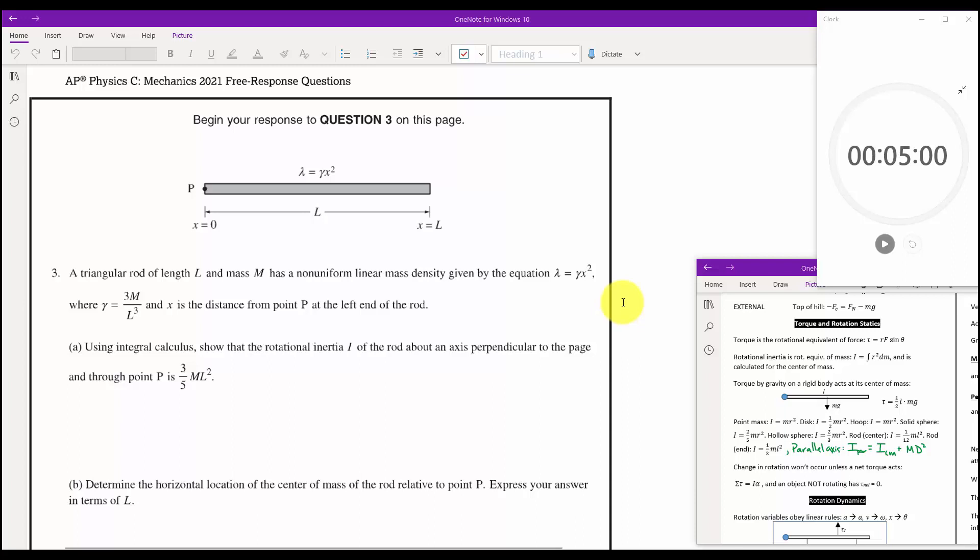Okay, problem number three. I'm going to dub this one the FRQ of death. There was one, 2006, some old FRQ that had that name. It was like a rope with linear density variation was falling over a table. It was bad.